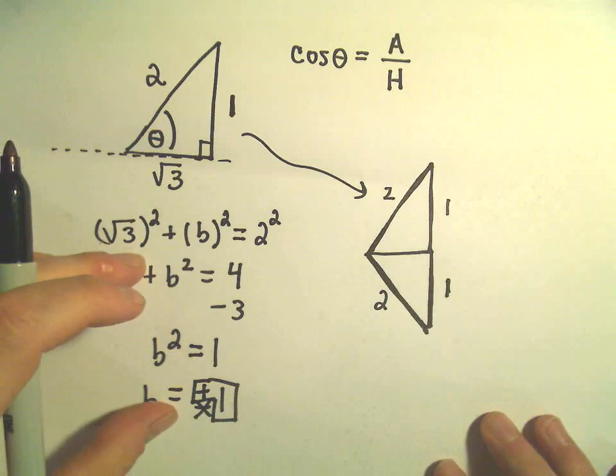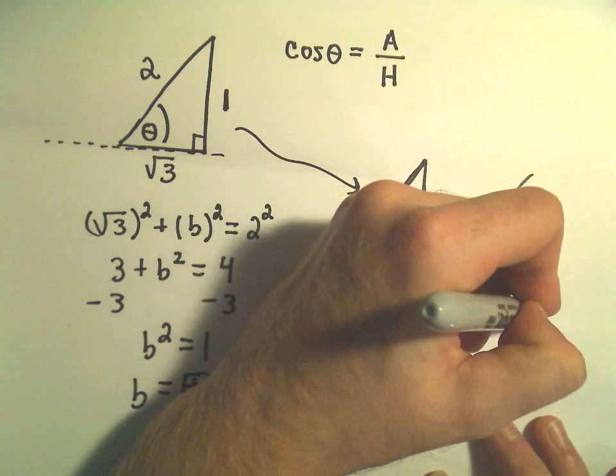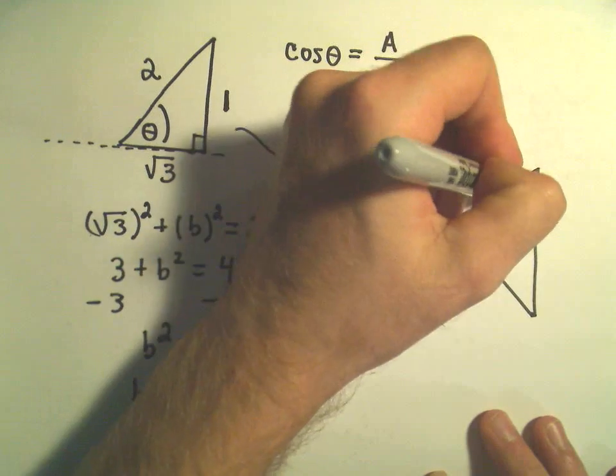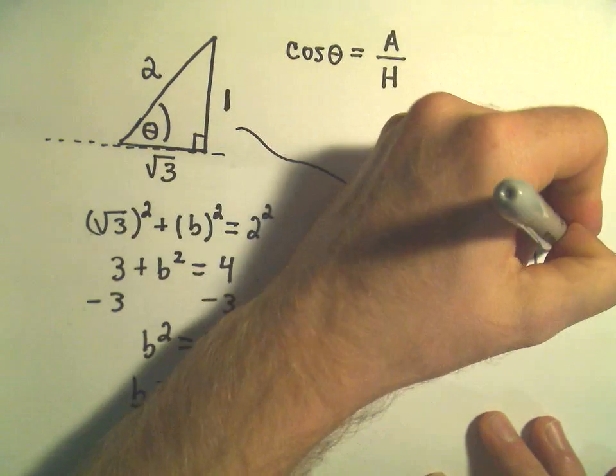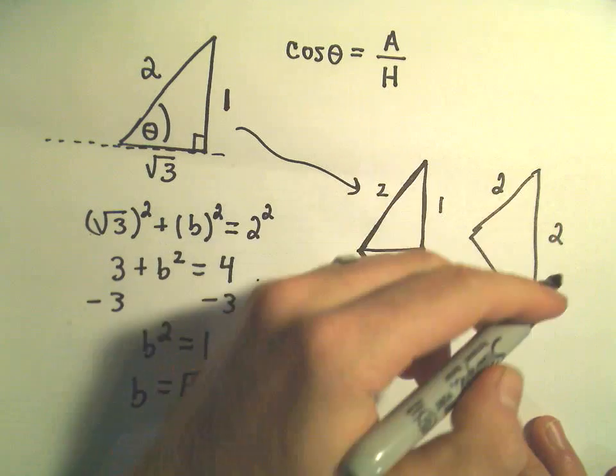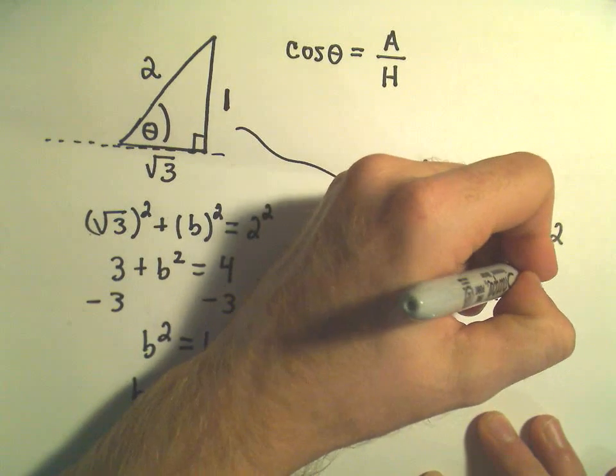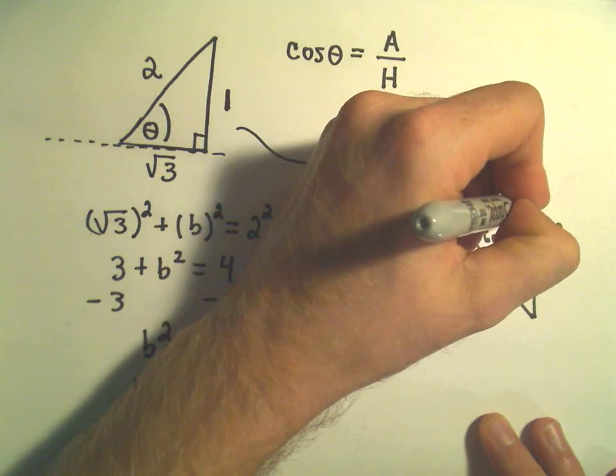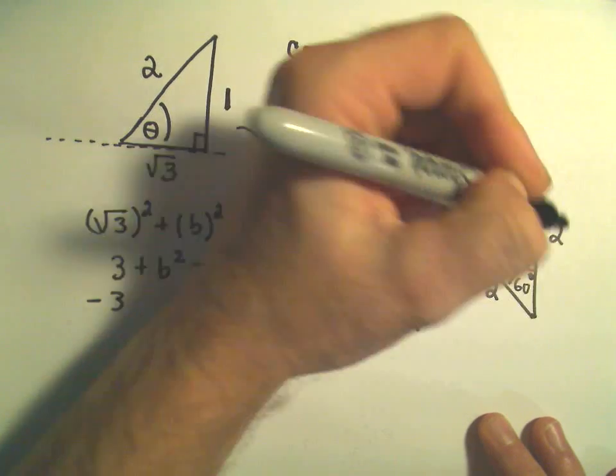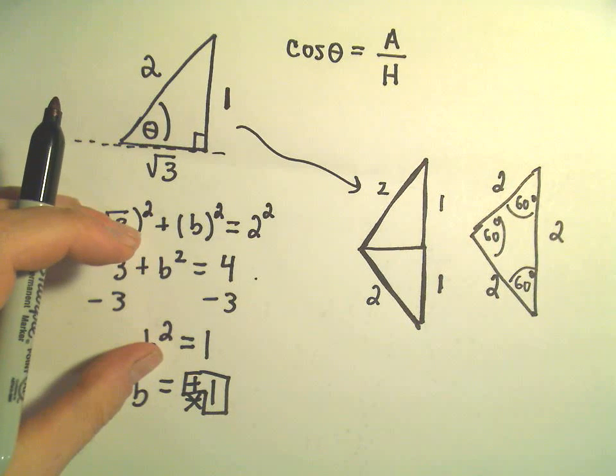But if you think about it now, what we really have is, we've got an equilateral triangle. Because this is length 2, this is length 2, this entire length adds up to 2. So that means, since all the side lengths are the same, that means all the angles inside are the same, and since all the angles have to add up to 180 degrees, we know that each one of those angles has to be 60 degrees individually.